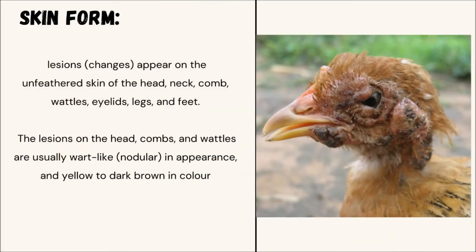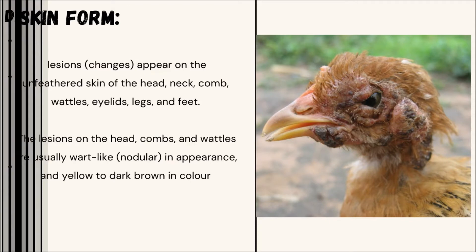Skin form: Lesions or changes appear on the unfeathered skin of the head, neck, comb, wattles, eyelids, legs, and feet. The lesions on the head, comb, and wattles are usually wart-like in appearance and yellow to dark brown in color.